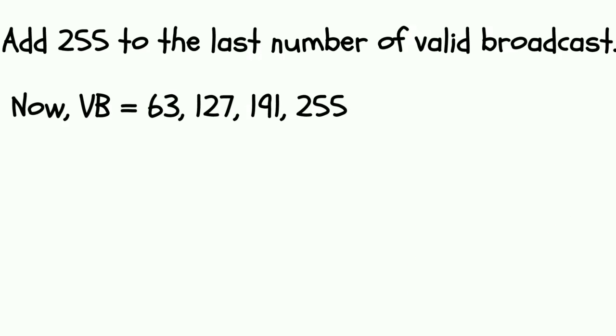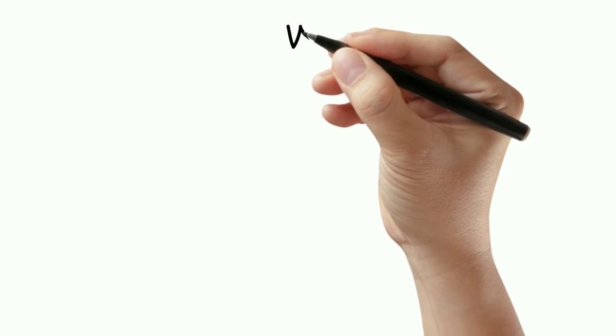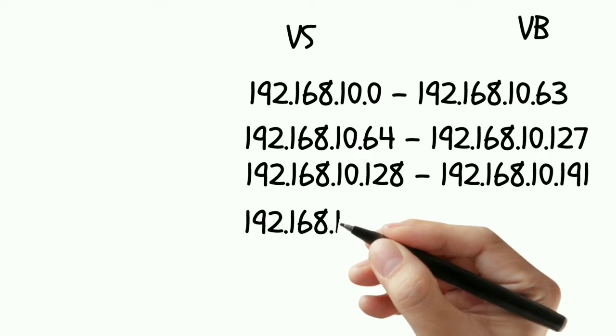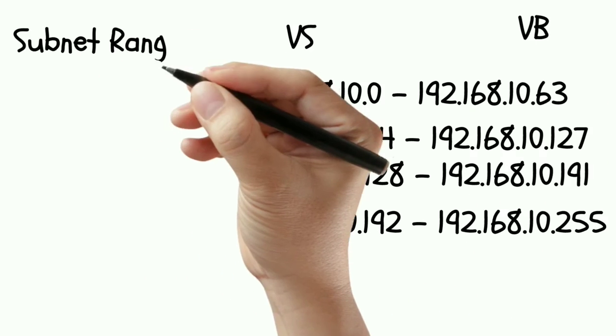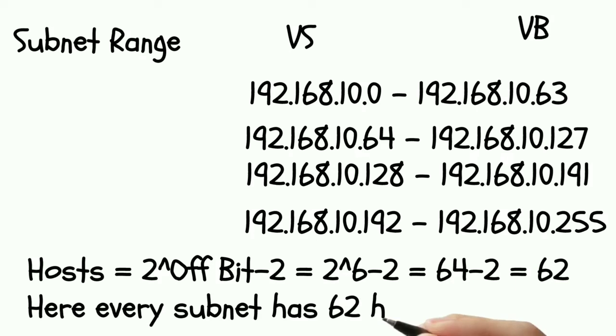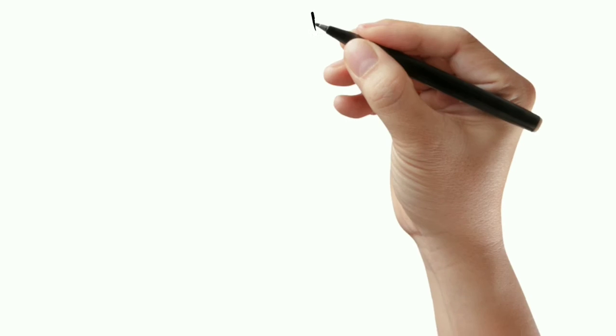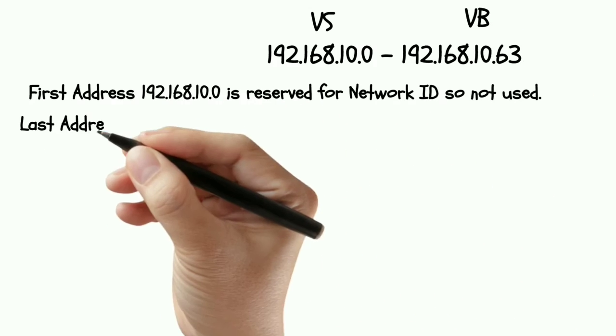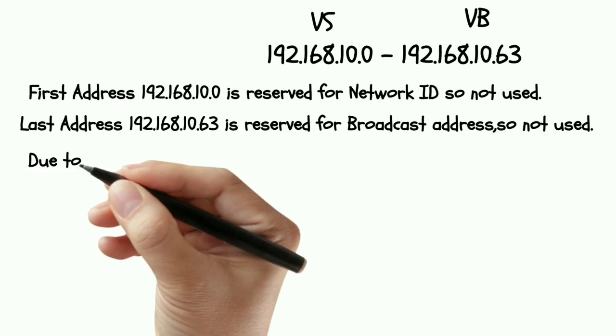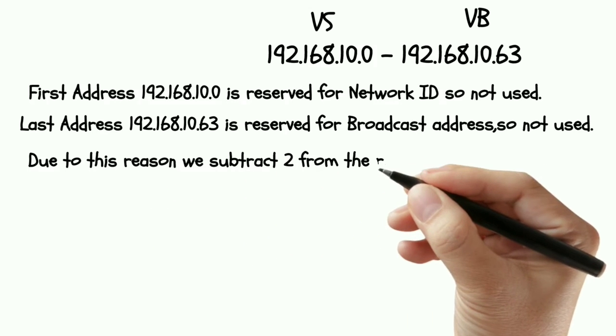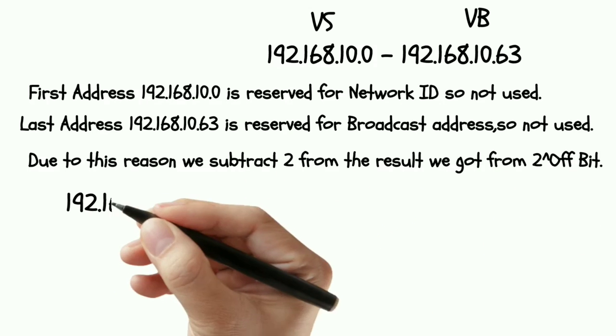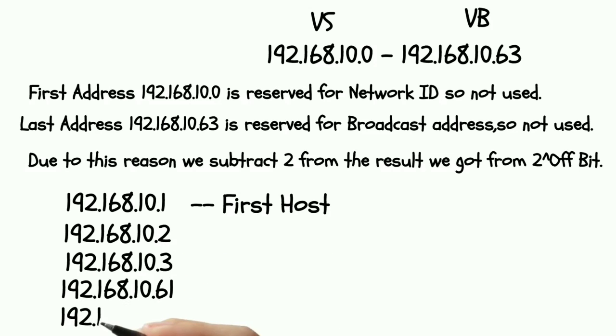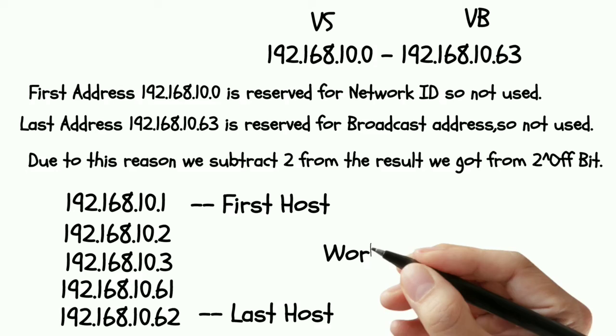Here subnet range is shown along with the number of host each subnet has. Let's take one subnet address. Here first address and last address is reserved for network ID and broadcast address. So these addresses are not used. Due to this reason, we subtract 2 while we calculate the number of host.